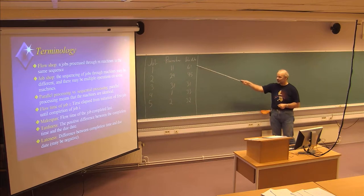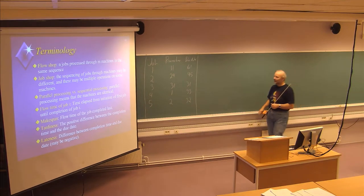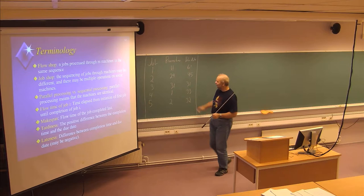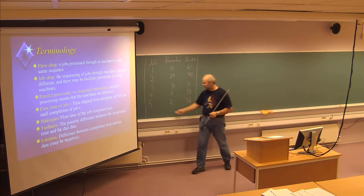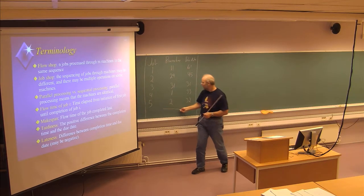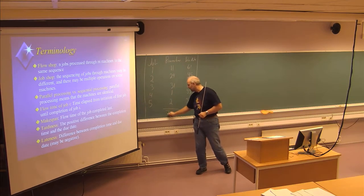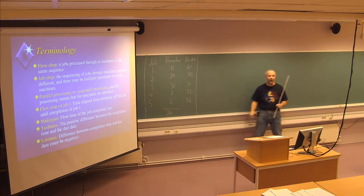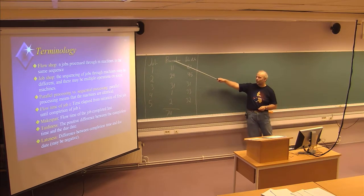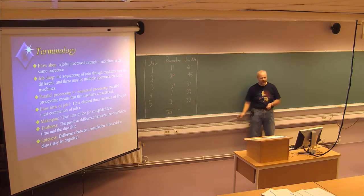When you have only one machine, the makespan will always be the same. In this example, the makespan will be the sum of all the process times for all the jobs, which is 74. Independent of sequence, if you have only one machine to process all these jobs, the last job will be finished by day 74.